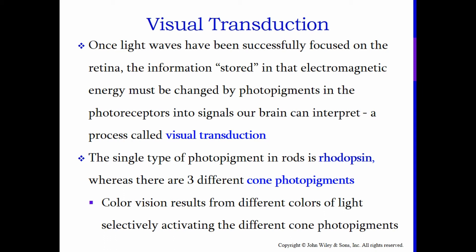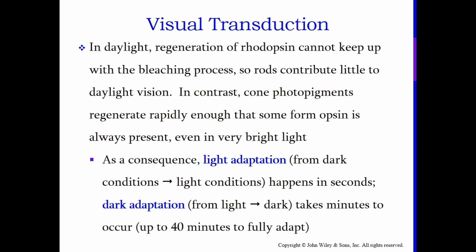Visual transduction: once light waves have been successfully focused on the retina, the information stored in that electromagnetic energy must be changed by photopigments in the photoreceptors into signals our brain can interpret — a process called visual transduction. Basically, light rays are converted into electrical stimulation that goes to your brain. The single type of photopigment in rods is called rhodopsin, whereas there are three different kinds of cone pigments, which are sensitive to red, blue, and green. Color vision results from different colors of light selectively activating the different cone photopigments, and we can see many different shades depending on the concentration at which those three cone types are stimulated.